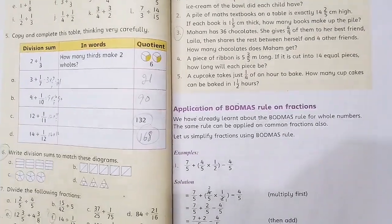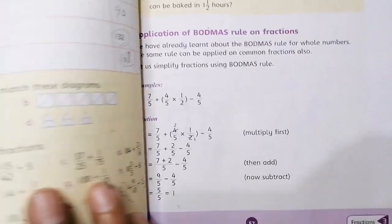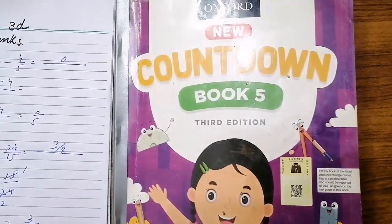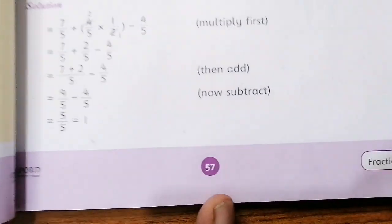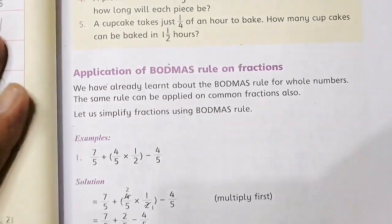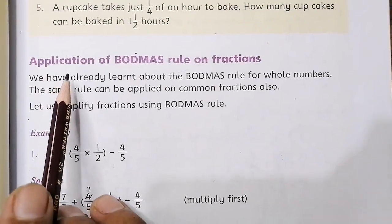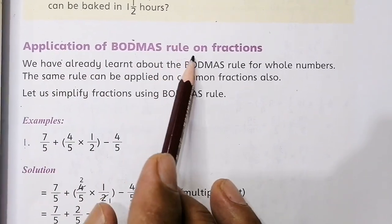Assalamualaikum dear students, I am your maths teacher. Today we will study from Countdown Book 5, page number 57, chapter number 3. We will learn about applications of BODMAS rule on fractions.